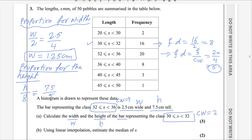To take the proportion: height H with frequency density of this class equals height of the other class with frequency density of the other class. From here you get the value of H. H equals 7.5 divided by 5, then multiplied by 8, which gives the answer 12 centimeters.